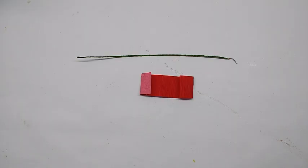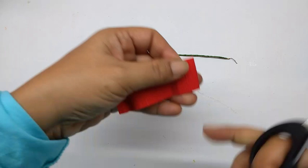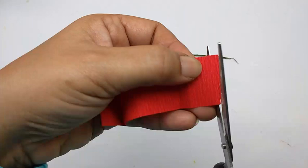Now take the red strip and make fine cuts on it all along the whole length, leaving a margin about half a centimeter. Cut very fine strips the whole length.